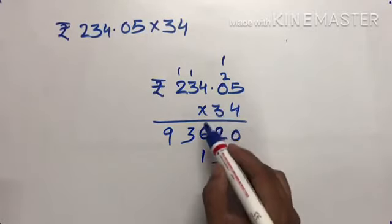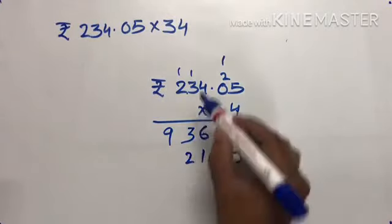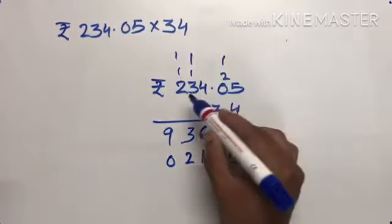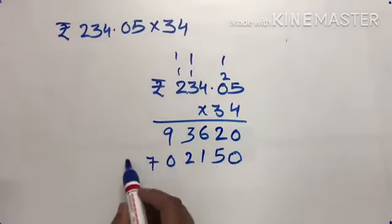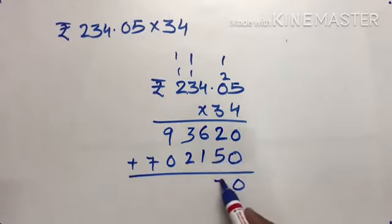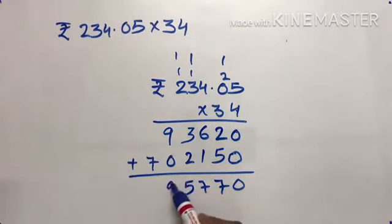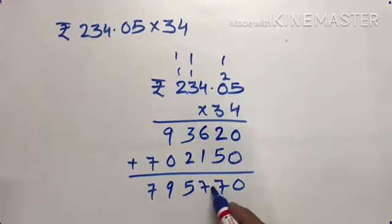Now add: 0 plus 5 is 5, 6 plus 1 is 7, 2 plus 3 is 5, 9 plus 0 is 9, and 7. After the point, there should be 2 digits, so the answer is 7,957.70. This is our answer.